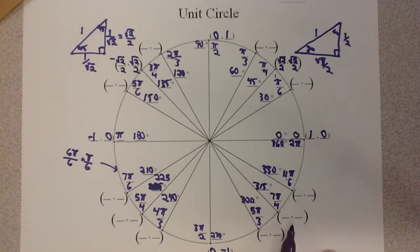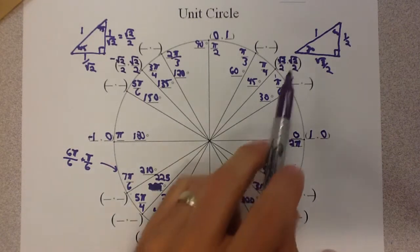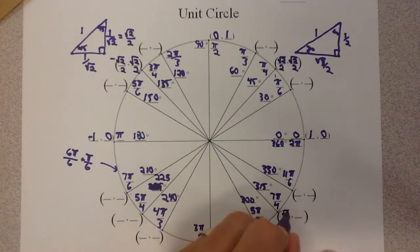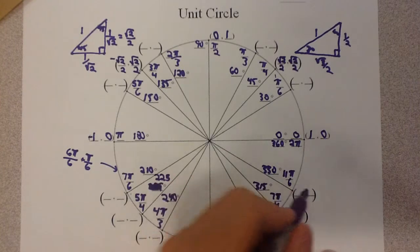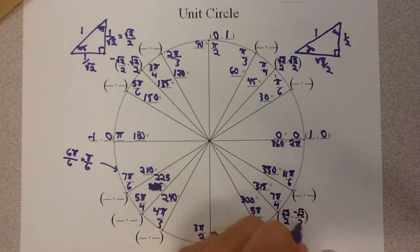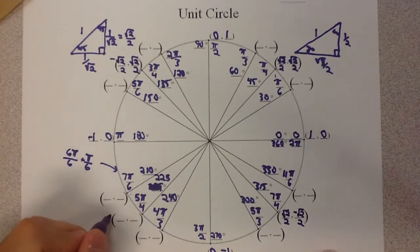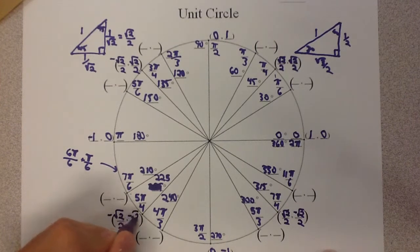Now, down in quadrant 4, down in this bottom right corner, we took this one and now made the y value negative. So, root 2 over 2, negative root 2 over 2. And down in the bottom left, they're both negative, because they're in quadrant 3, negative root 2 over 2, negative root 2 over 2.